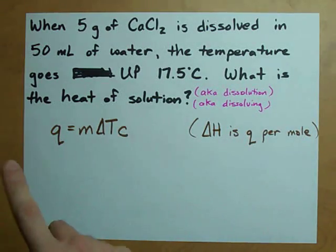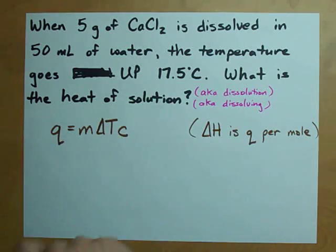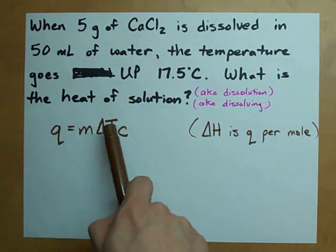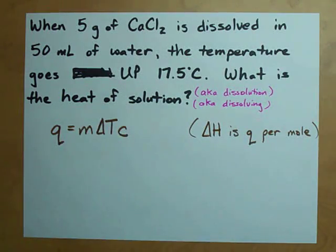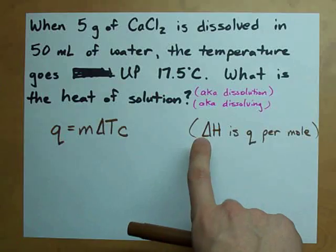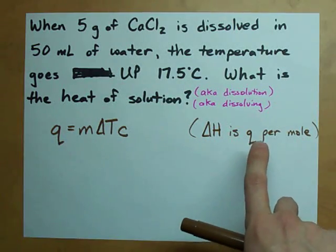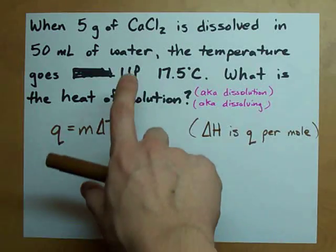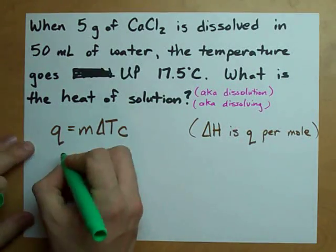Long story short, you need to know how much heat was liberated when it dissolved. You can do that using mΔTc: mass, change in temperature, heat capacity. And ΔH is simply the amount of heat that was released, but usually per mole of the solution. So we're going to need to convert that to moles at some point. Let's not get ahead of ourselves. Let's find out how much heat was released.